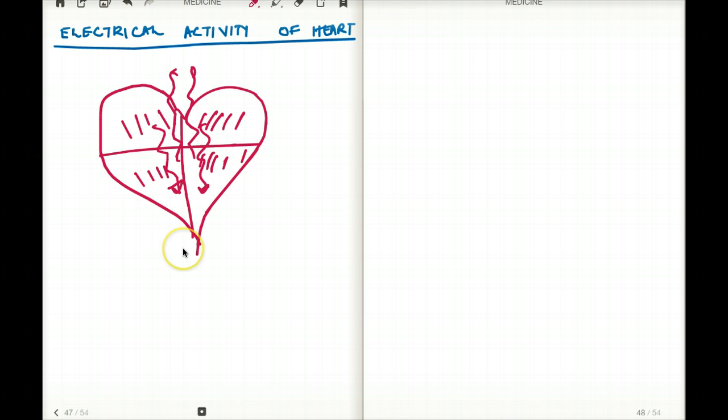The sophisticated conduction system is called the auto-rhythmic cells. These auto-rhythmic cells do two things. They initiate, number one. And number two, they're also going to trigger conduction.